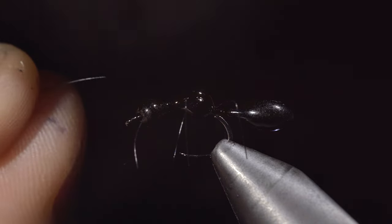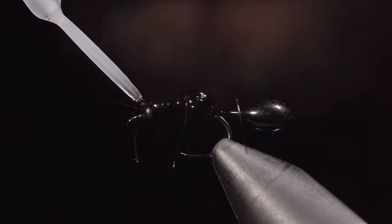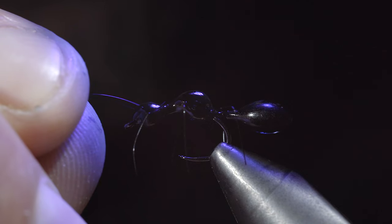Next, we will add a drop of UV resin to the head and use this to fix two antennas to our ant. Once happy, we'll secure them with the UV light.